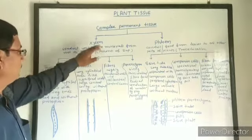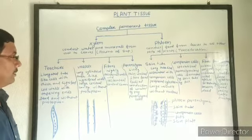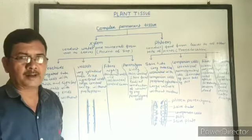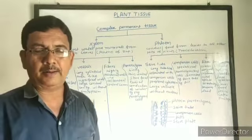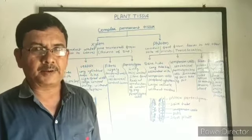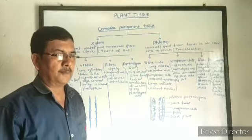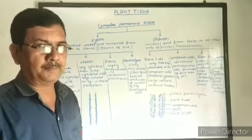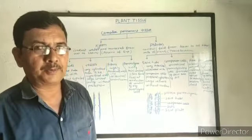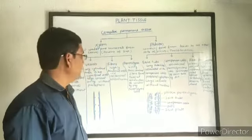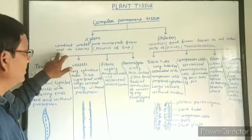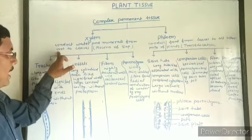Now firstly, xylem. Xylem conducts water and minerals from root to leaves. The process of conduction of water and minerals from root to leaf is called ascent of sap. Ascent means upward movement, and sap means minerals dissolved in water. The upward movement of sap is called ascent of sap, which occurs through xylem.